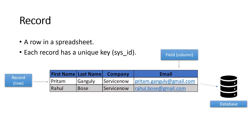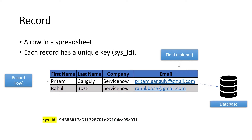Each record has a unique key called a SysID — a Global Unique Identifier, also known as GUID. A SysID is a 32-character string, and every record on every table in ServiceNow has one — that's how each record gets identified. It's auto-generated, so you don't need to remember the 32 characters. We'll discuss SysID more later, especially when we get into ServiceNow development.